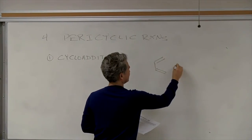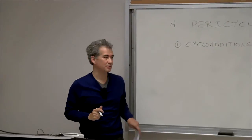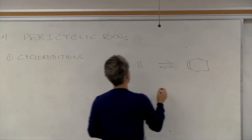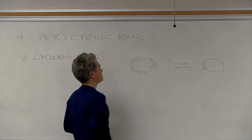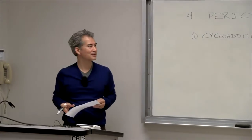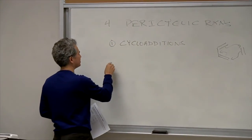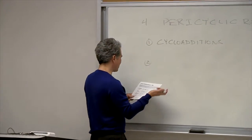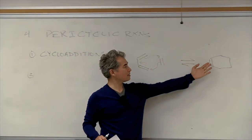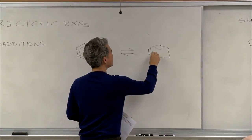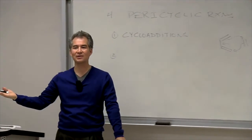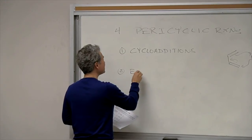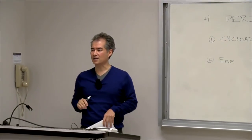There are four types of canonical pericyclic reactions. The first is cycloadditions — everyone knows the Diels-Alder reaction, which is a specific example. You have a cyclic transition state where all the pi electrons are engaged. This class includes Diels-Alder reactions, 3+2 dipolar cycloadditions, and cheletropic extrusions. If you push the arrows backwards, it's a retro-cycloaddition — we consider the forward and reverse as the same reaction because they proceed through the same transition state.